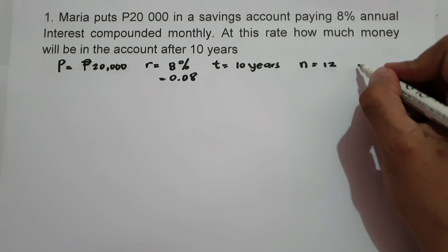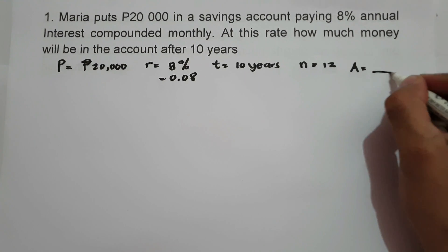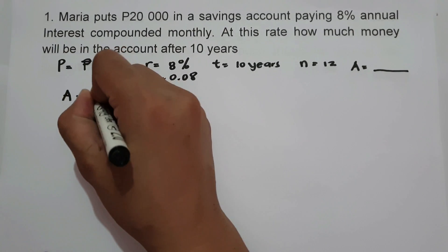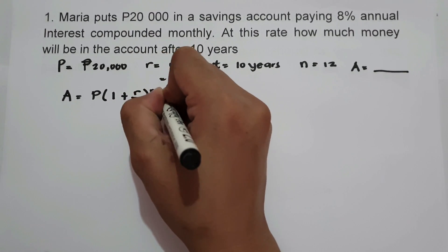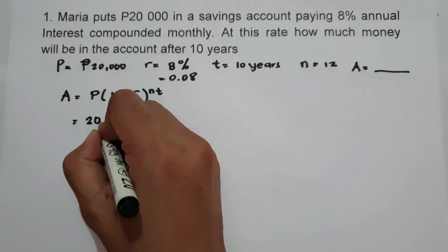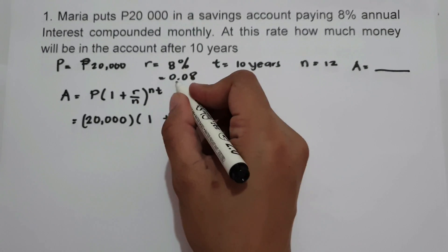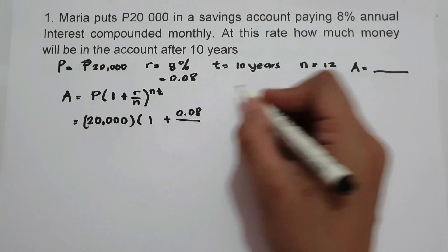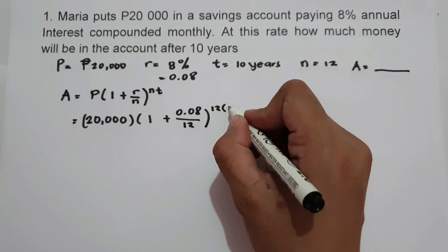We are looking for the amount of money in the account after 10 years, so we are going to find the future value. Using the formula: future value equals principal times 1 plus R over N raised to NT. We have principal 20,000, multiplied by 1 plus 0.08 over 12, raised to 12 times 10.